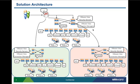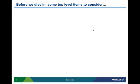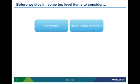Before diving deep into each area, here are some top-level items to consider. For Active Directory, make note of the existing AD configuration at the customer site and understand user requirements, location, and application access needs. From a network standpoint, document the current network infrastructure, IPs required, VLANs required for the architecture, and the workload that will be generated across the WAN. Making sure the network infrastructure can handle the load, or upgrading it beforehand, will make the design and architecture go smoothly.